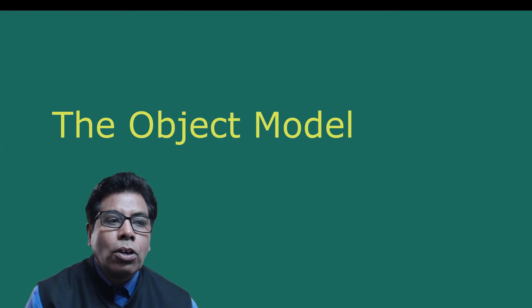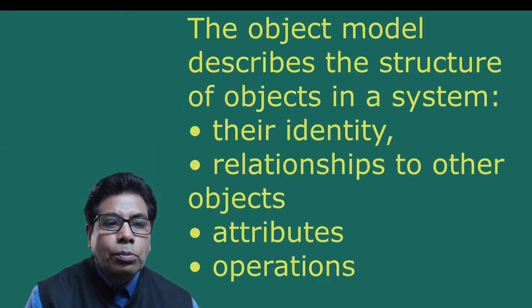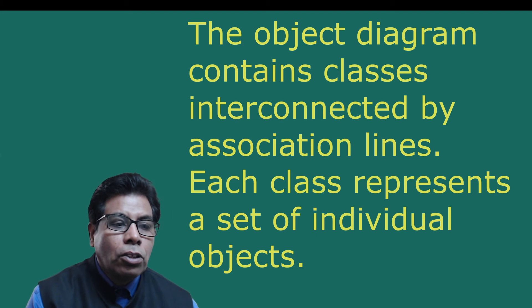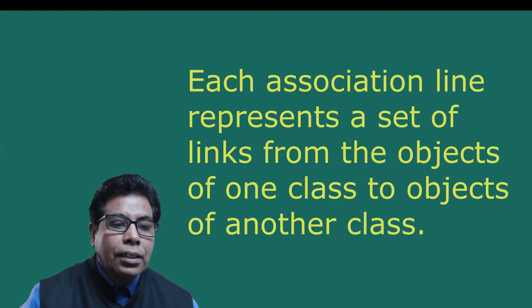The object model describes the structure of objects in a system — their identity, relationship to other objects, attributes and operations. The object model is represented graphically with an object diagram. The object diagram contains classes interconnected by association lines. Each class represents a set of individual objects, and each association line represents a set of links from objects of one class to objects of another class.